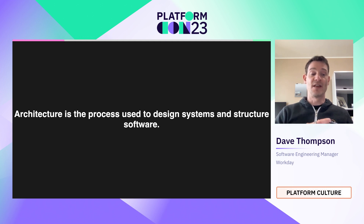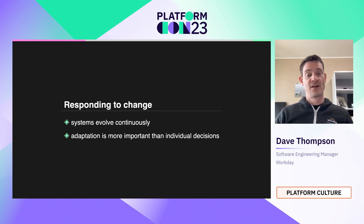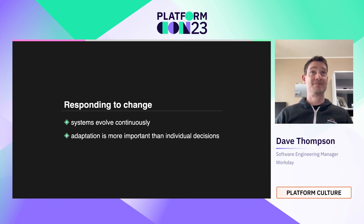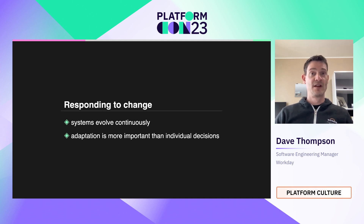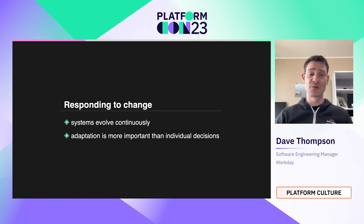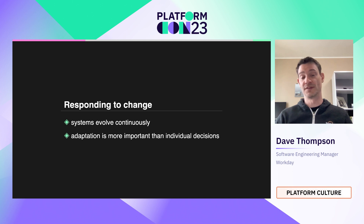I prefer a bottom-up approach to software architecture — thinking about it from a more agile context where development teams have more autonomy over the decisions they're making around system design. For me, architecture is not a thing, it's not a design — it's a process. Architecture is the process used to design systems and structure software. We need software architecture so that we can design systems that are able to respond to change. Our products evolve continuously, and that's why we have agile processes. Our systems need to evolve continuously and adapt to those same product changes.